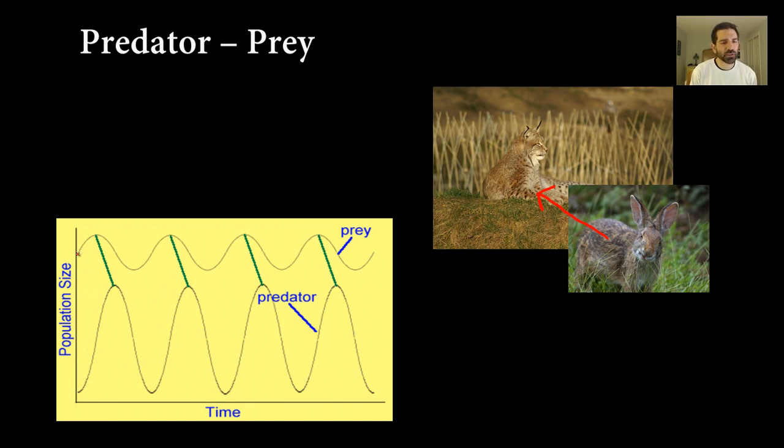At the beginning, the prey population rises. And then shortly following that, the predator population goes up. And why would that be? Well, if there are more prey, then the predator has more to eat and they can get lots of food and reproduce. So their numbers go up.